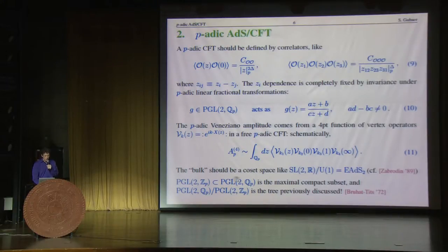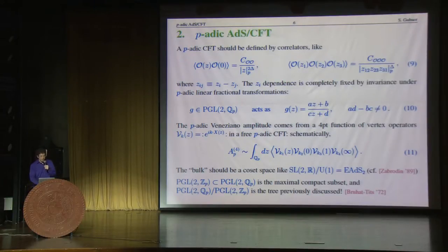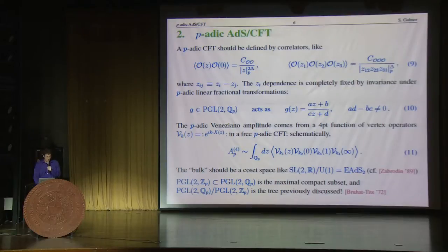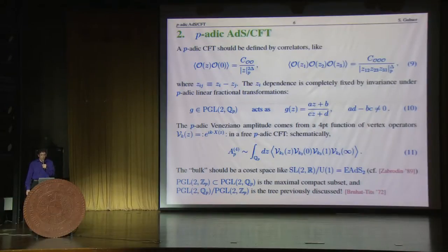Now let me come out with the amazing assertion that's been known since 1972 — that if you take the maximal compact subgroup of this p-adic conformal group, that maximal compact subgroup happens to be PGL(2) of the p-adic integers. And then this quotient really is the tree previously discussed. I'm not going to demonstrate it, but we can talk about it afterwards if you want to know how that happens.